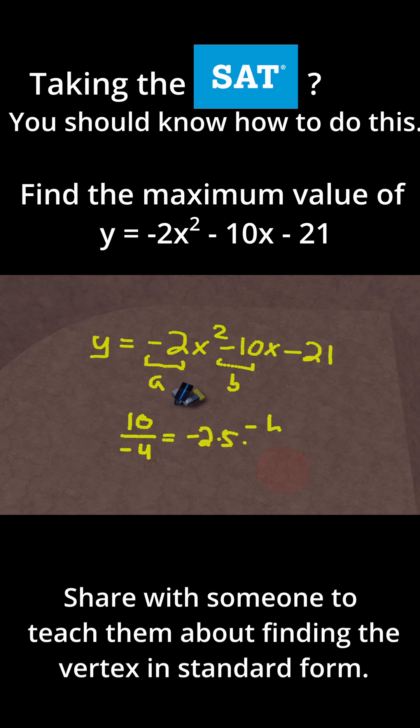So this is the x-coordinate. We need to plug that x-coordinate in to get the y-coordinate. First, I'm going to write that our vertex is going to be -2.5, and then we need to find the mystery y value. So let's plug in -2.5.